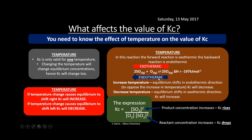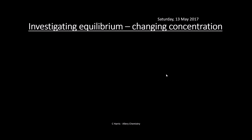Think of it like a fraction: if equilibrium shifts left, more SO₂ and O₂ (reactants) are produced, dividing by a bigger number makes Kc smaller. If equilibrium shifts right, more SO₃ (product) increases the numerator, so Kc rises.